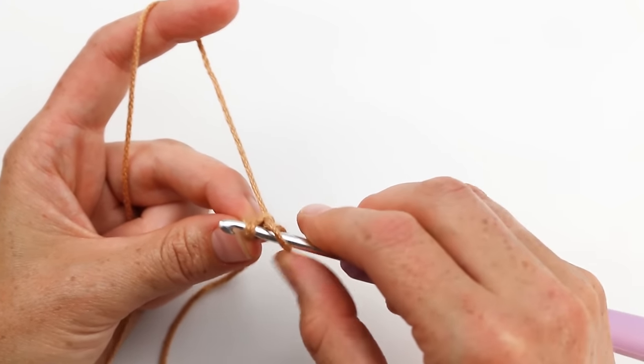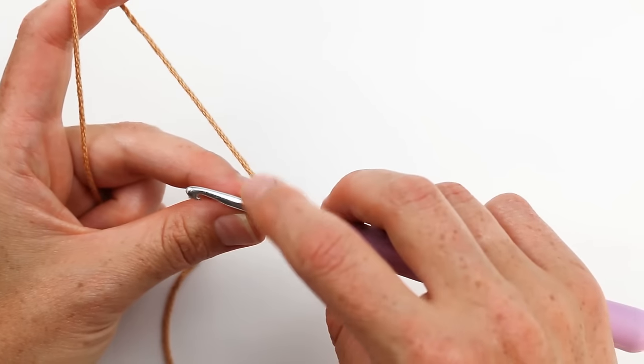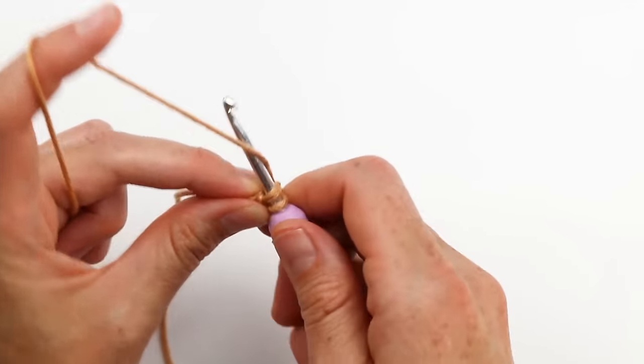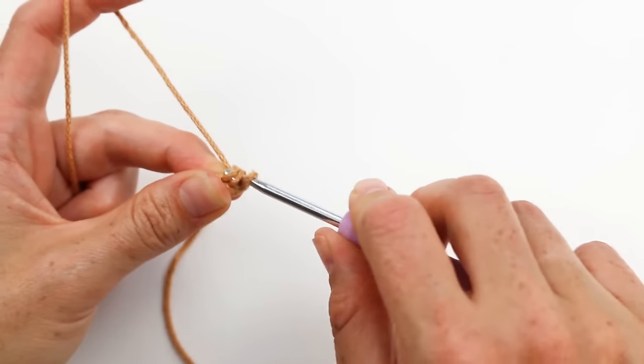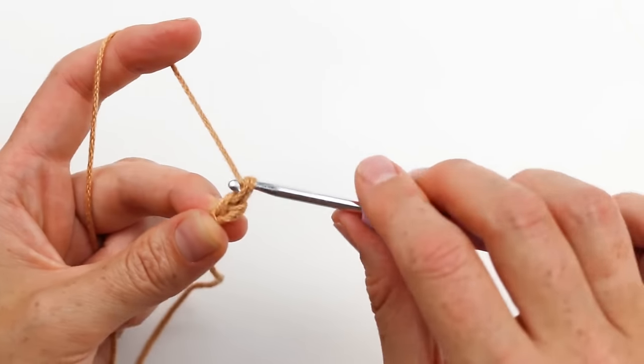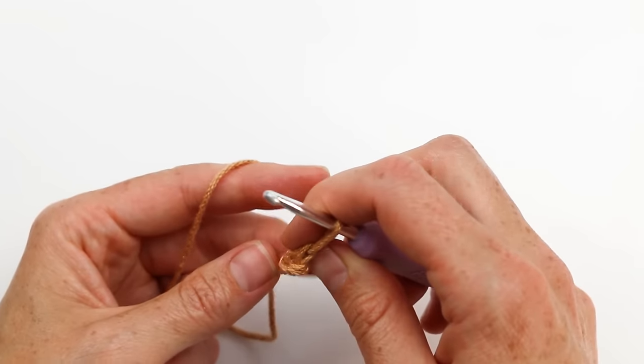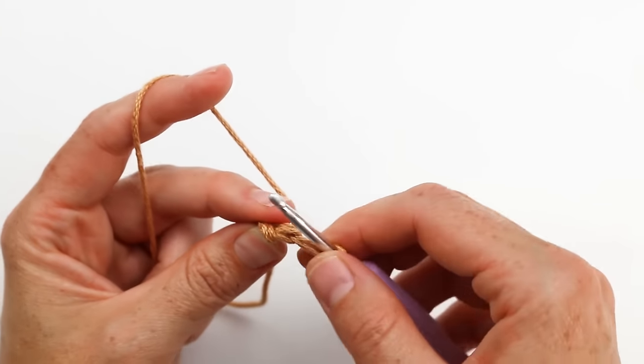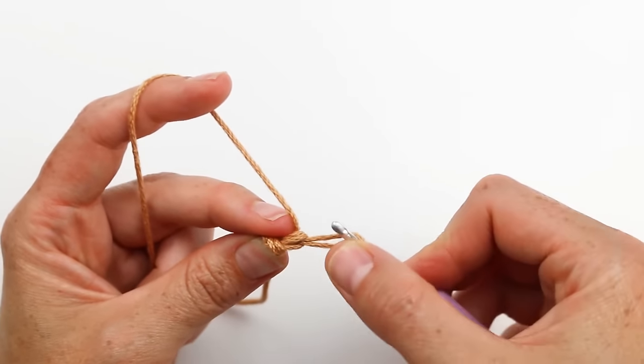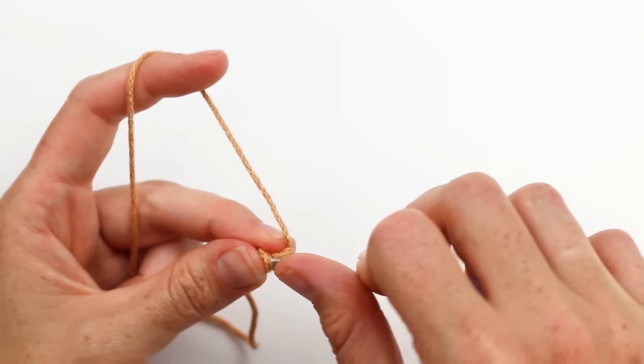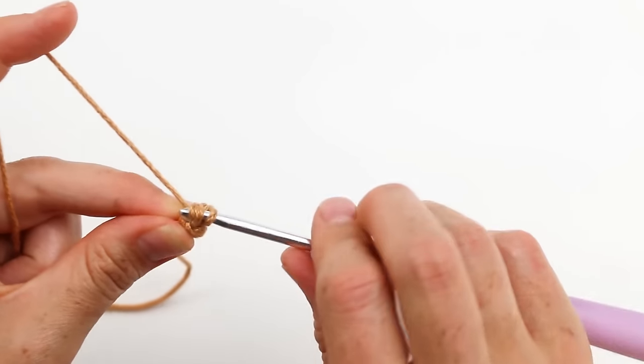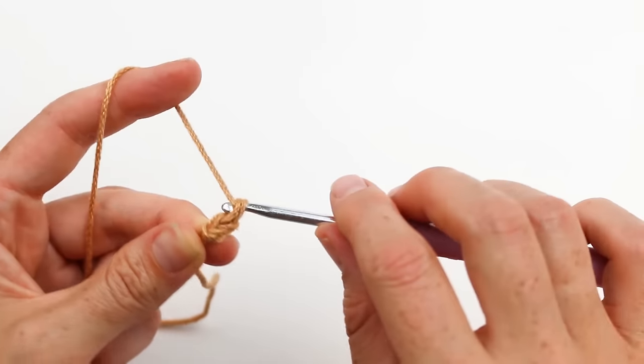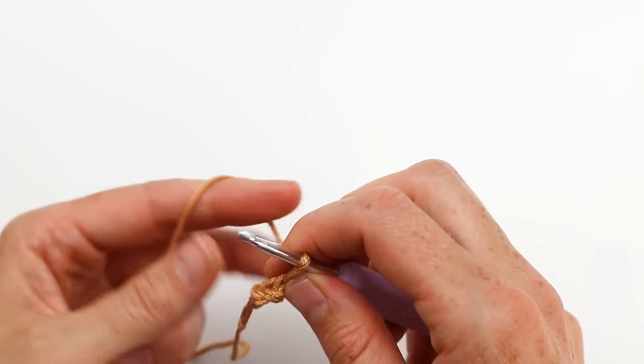I'm going to work my single crochet right under those stitches and single crochet. So after I complete that, I'm going to rotate it again, find the bars at the back of the stitch, and insert my hook, yarn over, and complete my single crochet. So this whole cord is just working that stitch over and over again.